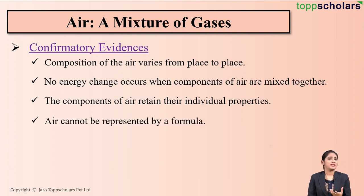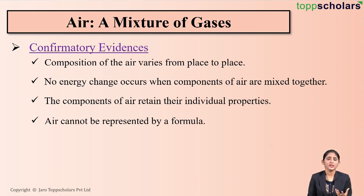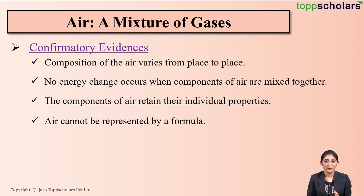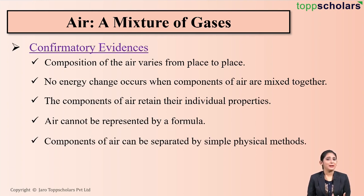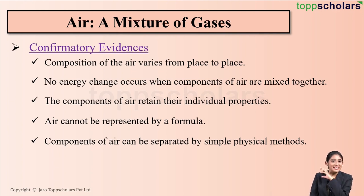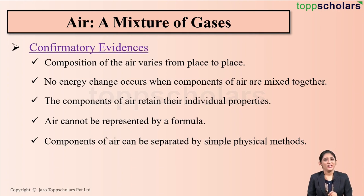Also, air cannot be represented by any formula. But we can easily represent a compound by formula — for example, water is a compound represented by the formula H₂O. So we say that air is a mixture since it cannot be represented by any formula. Also, the components of air can be easily separated by simple physical methods, whereas the components of a compound cannot be separated by physical methods. These evidences confirm that air is a mixture of gases.